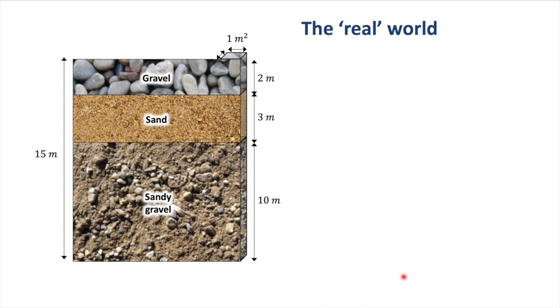The real world is, of course, much more complicated than the example we just looked at. In most sedimentary sequences, we can expect a range of different layers made of different materials. Here is an example of a gravel, sand and sandy gravel sequence with a total thickness of 15 meters. For every square meter of aquifer area at the surface, we can calculate the quantity of void space that will be below it.